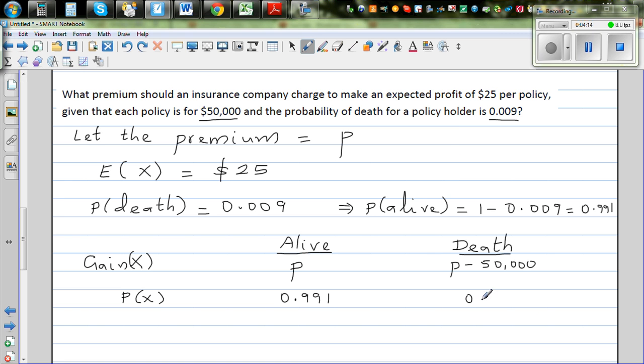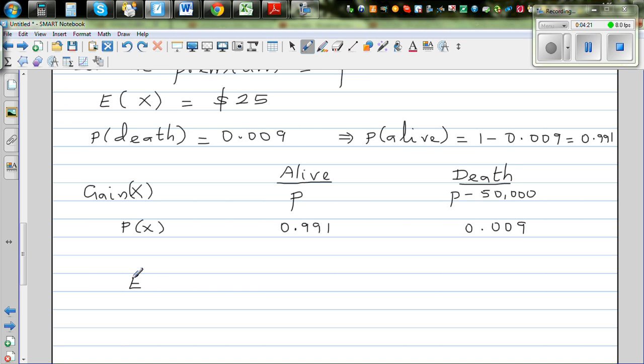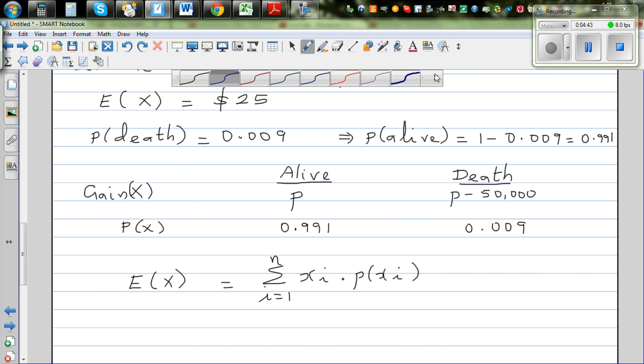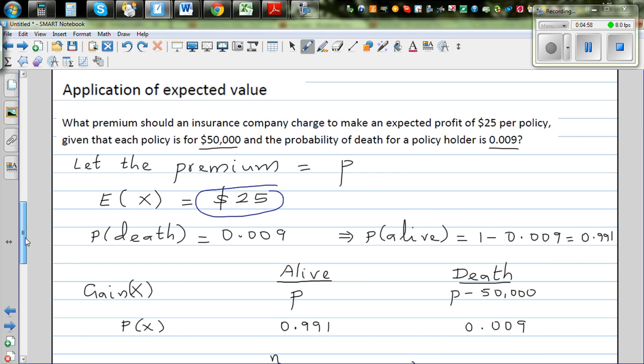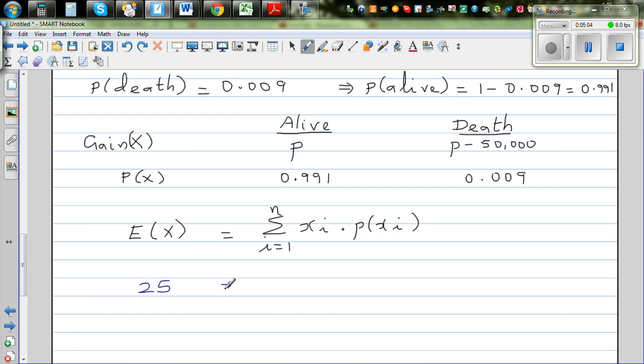So we can write the formula: the expected value of a random variable X is sigma i from 1 to n of xi times probability of xi. The expected value of this situation is 25 - they want an expected gain of $25. So I can say this 25 is equal to P times 0.991.